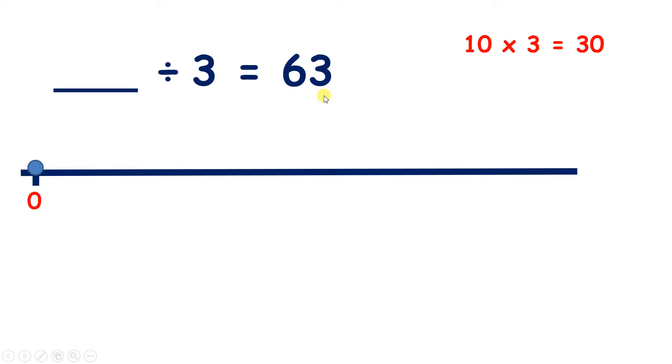That will mean we've counted 63 steps of 3 altogether. So we have 30, 60, 90, 120, 150.